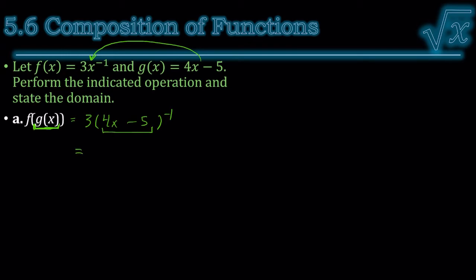Then, we need to simplify the negative exponent. It says reciprocal. So the 4x minus 5 is going on the bottom. 3 is staying on top. There we go.